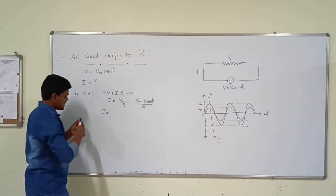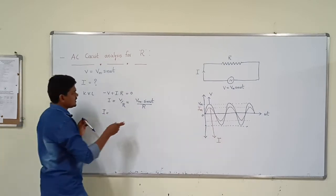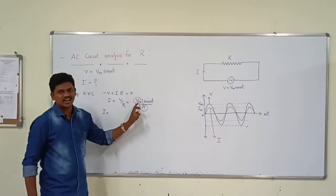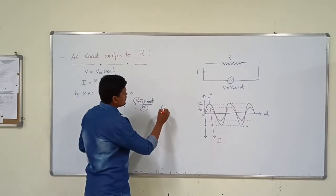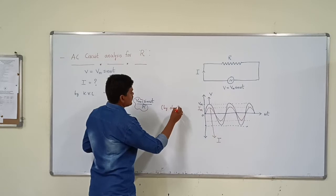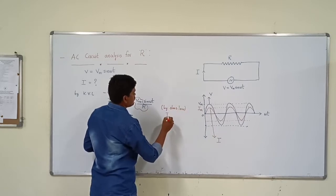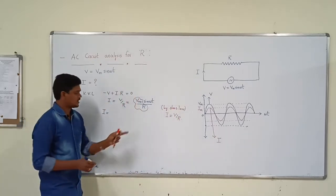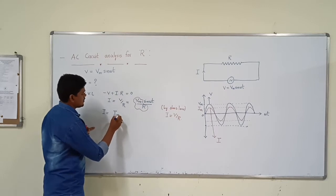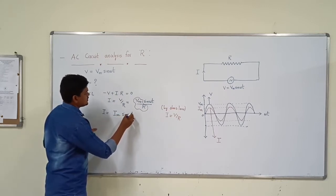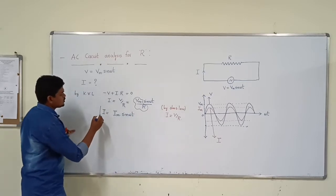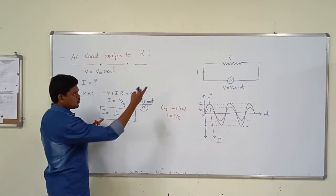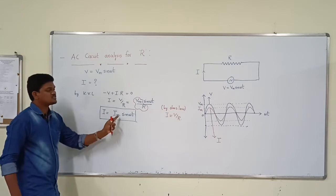Finally, current equals Vm by R — that is, voltage by resistance. According to Ohm's law, I equal to V by R. Simply replacing Vm by R with Im, the current equation becomes Im sin omega t. So the current flowing through the resistor, whenever single phase AC supply is given, the current value is Im sin omega t.